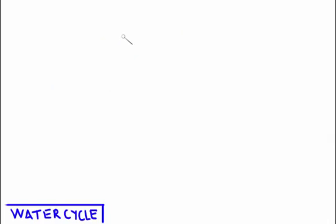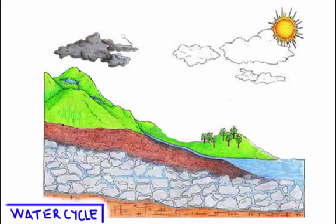The next cycle that we need to talk about is the water cycle. So here's a picture of an environment. Got some mountains, rivers, lake or an ocean. And let's start with the water over here. Let's start with the ocean.